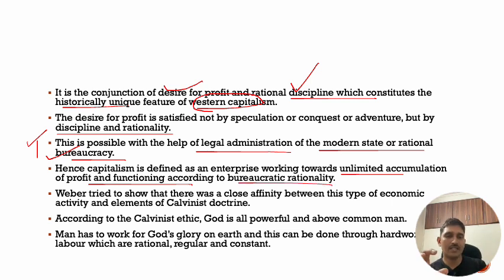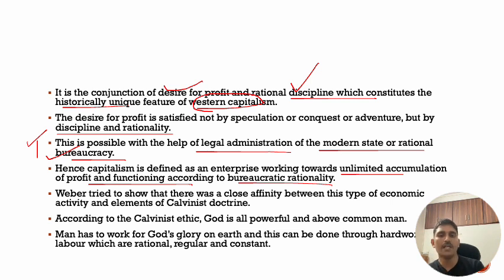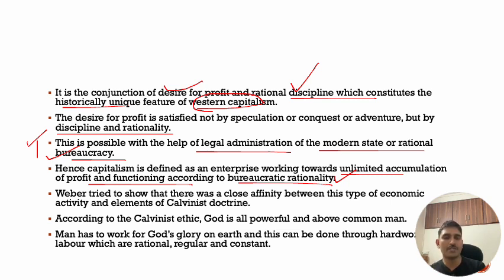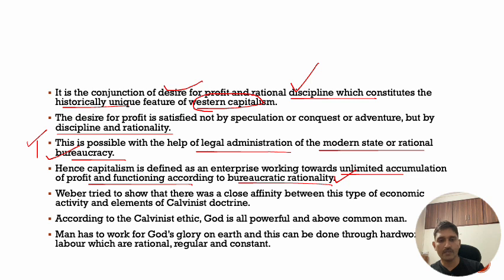As gradually the need for profit maximization arose, a demand for bureaucratic systems arose by default. People then established bureaucratic systems in their factory systems of production — with managers, workers, workers obeying managers, discipline, and decision-making in the hands of managers rather than workers. This is basically the idea for development of capitalism. Weber tried to show that there was a close affinity between this type of economic activity and the elements of Calvinist doctrine.